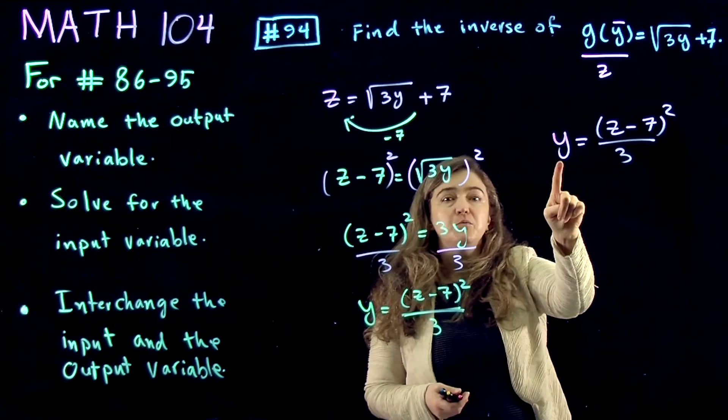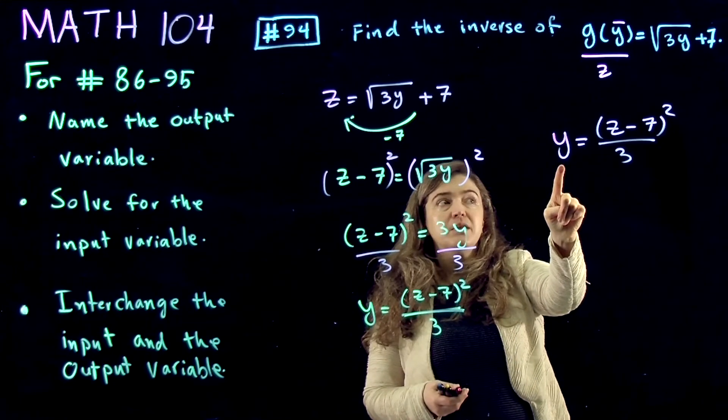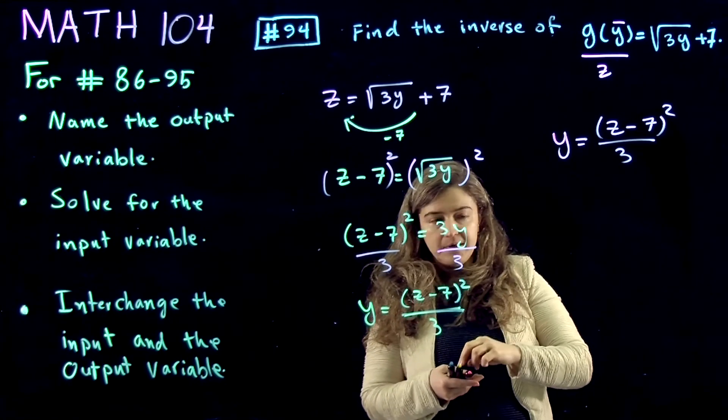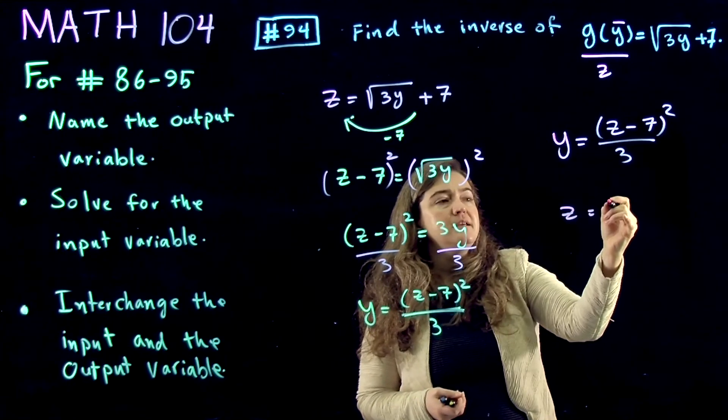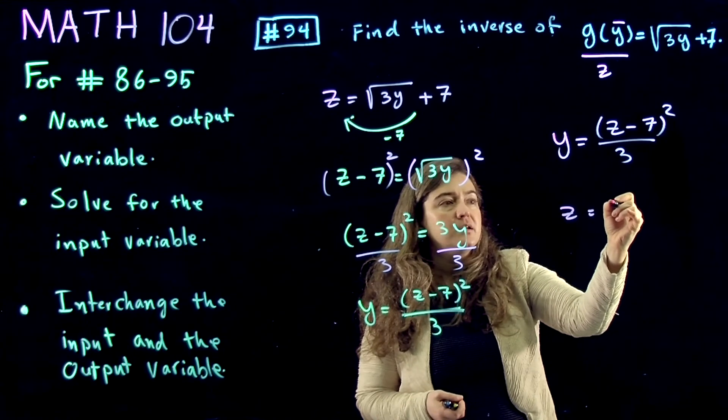So wherever I see y, y was the input variable, I have to replace it with the output variable which is z. Whenever I see z, I replace it with y.